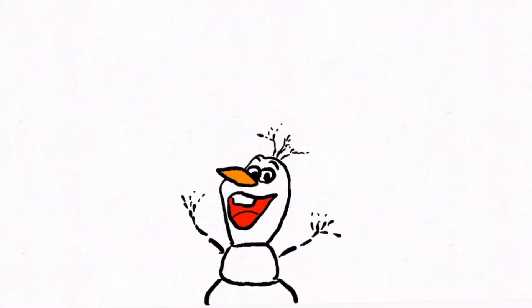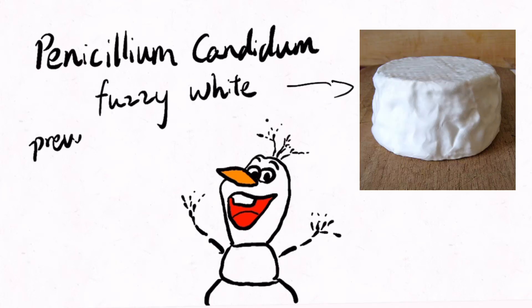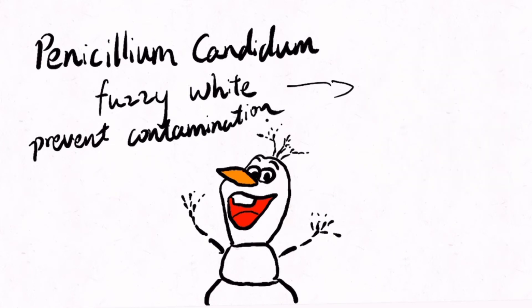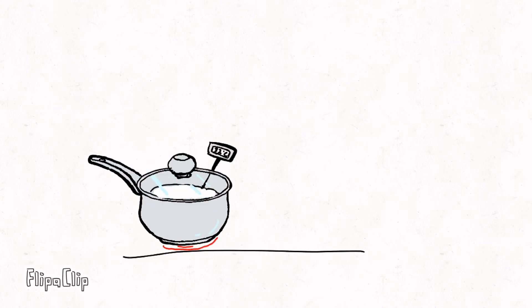Penicillium candidum mold powder is also sprinkled over the milk. Penicillium candidum is a mold that gives the surface of camembert cheese a fuzzy white texture and prevents contamination from other microbials by catabolizing lactic acid. After rehydrate for 5 minutes, mix well using a whisk in an up and down motion. Cover and maintain 32 degrees Celsius letting the milk ripen for 1.5 hours.